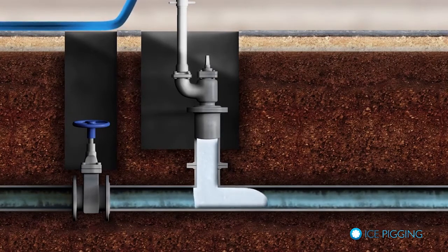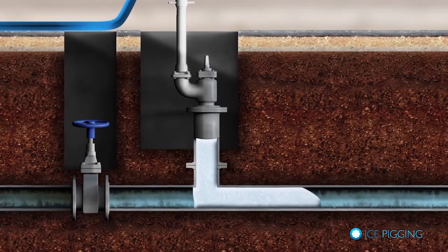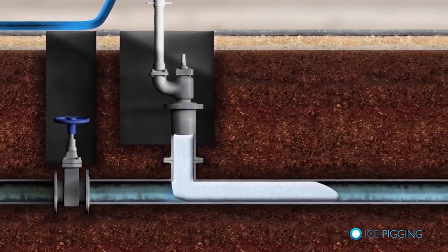This ensures the ice forms a pig when the ice is injected. An ice pig is essentially a section of pipe that is full of ice.